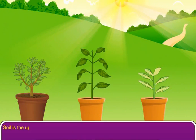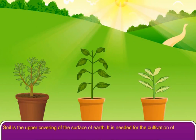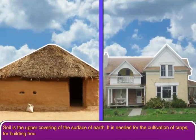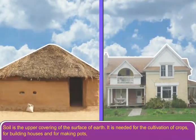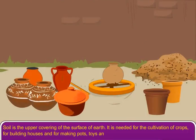Soil is the upper covering of the surface of the earth. It is needed for the cultivation of crops, for building houses, and for making pots, toys, and many more things.